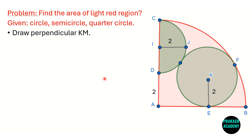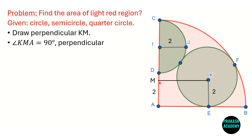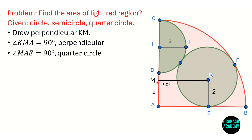I will use some construction and the Pythagorean theorem to solve this problem. First, let us draw a perpendicular from K to the line AC, and call this point M. So KM is perpendicular to AC, meaning angle KMA equals 90 degrees. Also, angle MAE is 90 degrees because this is a quarter circle.